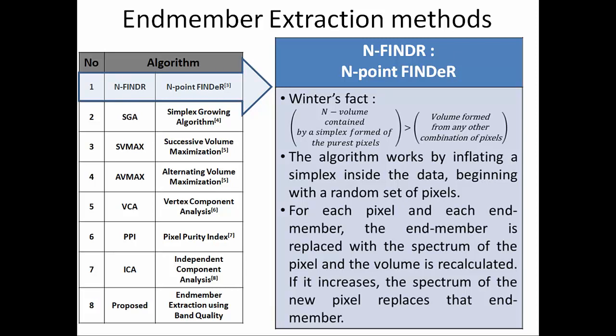When we talk about spectral unmixing, it is the identification of pure pixels. If I know how many pure pixels there are, then only I can find out the abundance estimation. The number of pure pixels can be found by convex hull geometry — Winters' theorem says that the maximum volume simplex is formed by the purest pixels. The purest pixels are actually represented on the boundary. We find out that boundary points are there and how many boundary points are present. If boundary points are phi, then we can say the number of pure pixels is phi. The volume formed by any other combination of pixels is always less than the volume contained by the simplex form of the purest pixels.